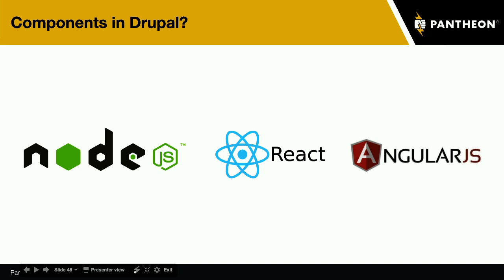I'd love to see someone just make a React component that edited the simplest possible config entity — an image style or something in core without as much complexity as a views exportable. We don't need to keep the assumption that breaking backwards compatibility is the only way to get new things. And that leads us into a discussion of user trust, which is central to the reason WordPress maintains backwards compatibility as much as it does.